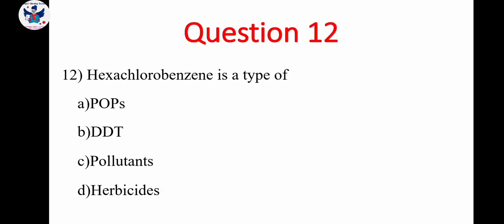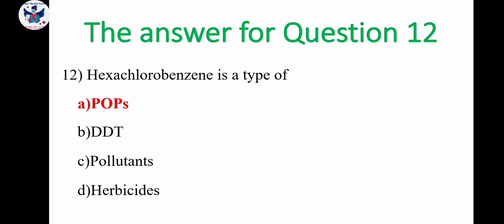Next, question 12. Hexachlorobenzene is a type of POP, B, DDT, C, pollutants, D, herbicides. So here option A is POP. POP means persistent organic pollutants. And B means dichlorodiphenyltrichloroethane. So the hexachlorobenzene comes under persistent organic pollutants. So the correct answer is option A. Persistent organic pollutants.